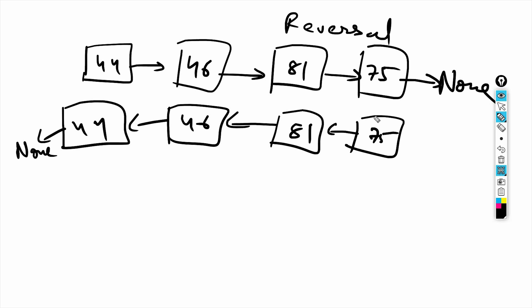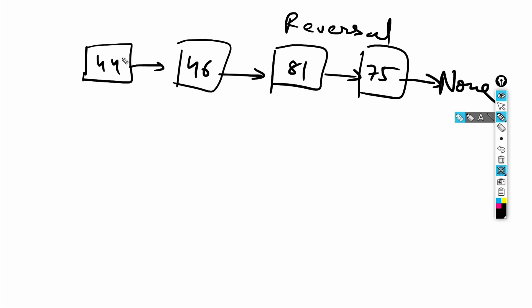And 44 will point to None. That's how reversal of a linked list works. 75 should be the new head. So let's see how we can approach this problem before writing code. If we start with the first node, we need to break the existing link and reverse it. So 44 should point to None — that's our first step. It's easier to first make 44 point to None and then break the bond.